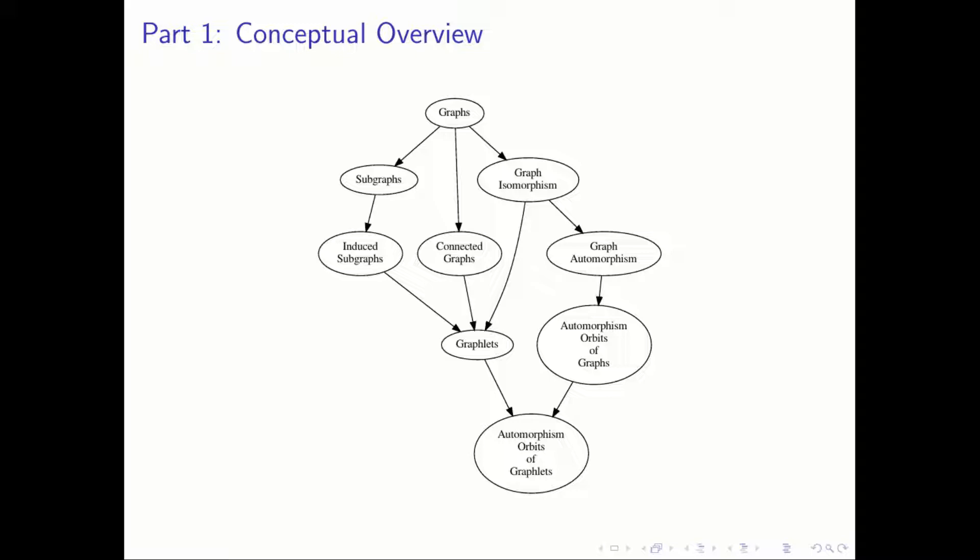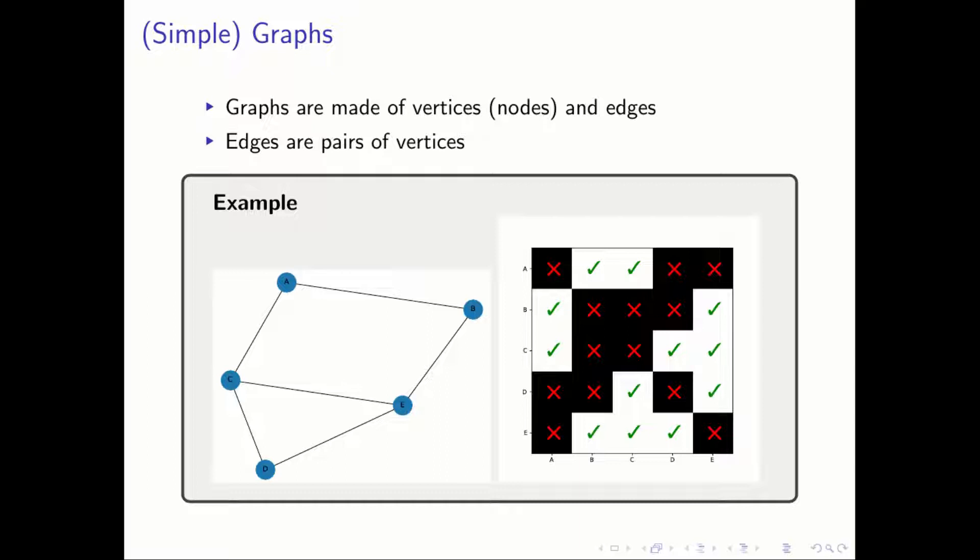Graphs are made of a collection of vertices and a collection of edges. You can think of edges as pairs of vertices. The example on the left is a simple graph whose vertices are labeled, and on the right we have an adjacency matrix for that same graph. Each entry in the adjacency matrix indicates whether a pair of vertices are connected, and in simple graphs nodes are never adjacent to themselves. Both of these representations tell us about the structure of a graph, which is sometimes called its topology or topological structure.